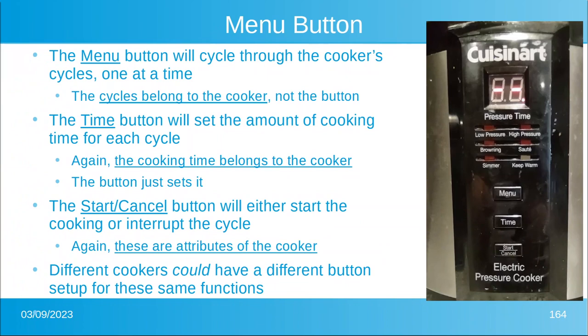Let's start with the menu button — it will cycle through all the cycles one at a time: low pressure, high pressure, browning, sauté. The cycles belong to the cooker, not to the button. The time button will set the amount of cooking time for each cycle — again, the cooking time belongs to the cooker; the button just sets it. The start/cancel button will either start the cooking or interrupt the cycle. Different cookers could have a different button setup — maybe a separate start and cancel button, or separate buttons for minutes and seconds.